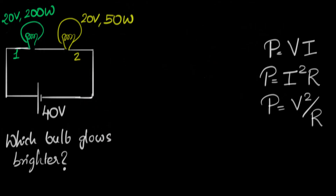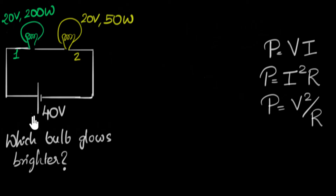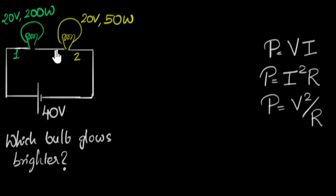Let's try another problem. This time we have two bulbs: one with a 20 volt, 200 watt power rating, and another with a 20 volt, 50 watt power rating, connected in series. This whole connection is connected across a 40 volt battery. We're asked to calculate which bulb glows brighter — basically, in which bulb there will be more power dissipated. The steps are similar: we'll use the power rating to figure out the resistance of each bulb, and then treat it as a series circuit problem.